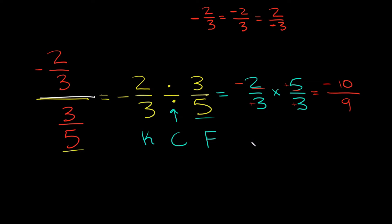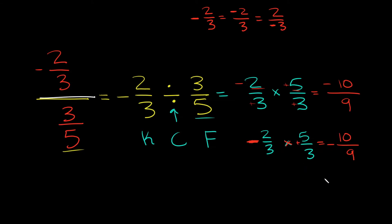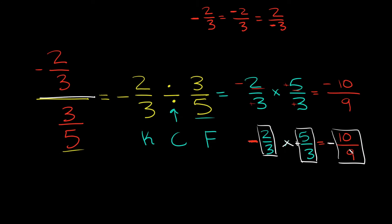The other way is to just leave the negative sign where it is and multiply by 5 over 3, ignoring the negative sign for now. So 2 times 5 is 10 in the numerator, and 3 times 3 is 9 in the denominator. Now bring the negative sign back — a negative fraction times a positive fraction is a negative fraction. In either case you get the same answer: negative 10 over 9.